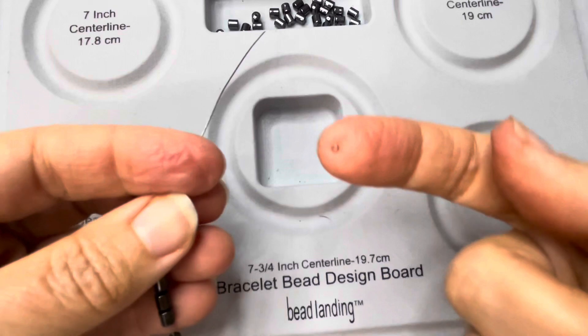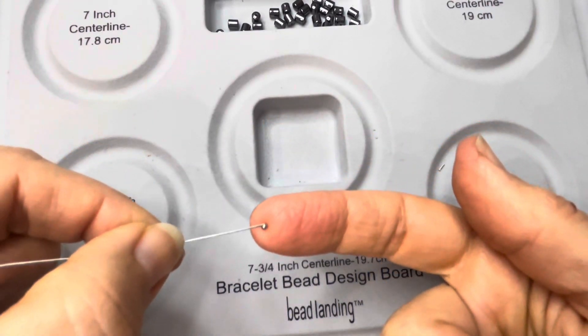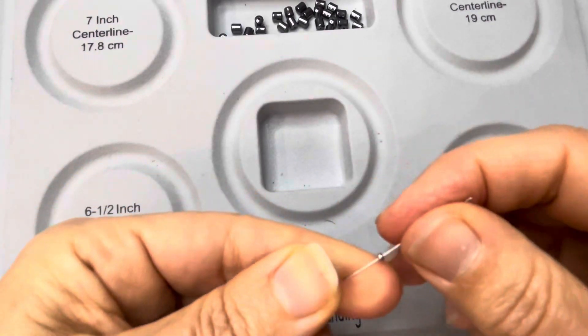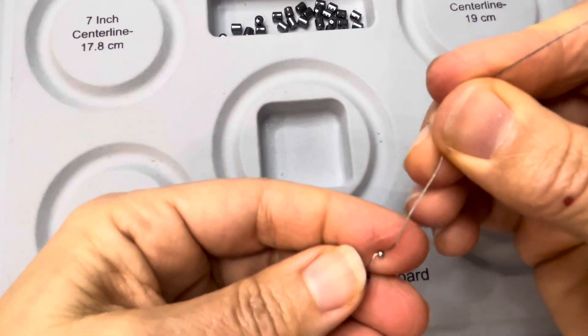a knot, this time we're going to use a tiny little crimp bead. Make sure it's small enough to fit in that barrel. You're going to slide that crimp bead all the way to the end as much as you can.